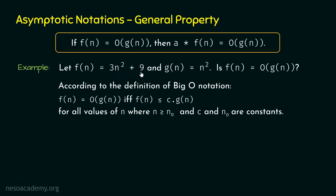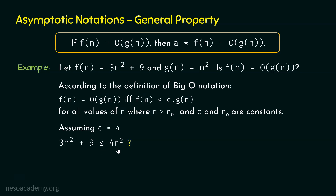We can assume a value of C based on the dominating term of F(n). The dominating term is 3n², which will eventually surpass the constant 9. Since G(n) is n², if we multiply G(n) by 4, we get 4n², which is greater than 3n². So after some point, G(n) will surpass F(n), meaning F(n) becomes less than or equal to C times G(n). Let's assume C as 4, giving us 3n² + 9 ≤ 4n².